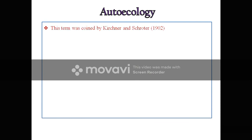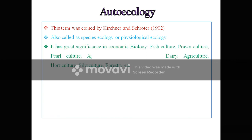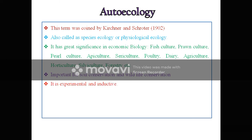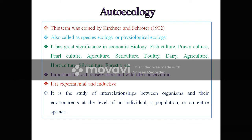Autoecology was coined by Kirchner and Schröter in 1902. It is also called species ecology or physiological ecology. It has great significance in economic biology such as fish culture, prawn culture, pearl culture, apiculture, sericulture, poultry, dairy, agriculture, horticulture, silviculture, and forestry — wherever a single species is involved. This study is important for soil conservation as well as wildlife conservation. Autoecology is experimental and inductive — it is the study of inter-relationships between organisms and their environment at the level of an individual, a population, or an entire species.